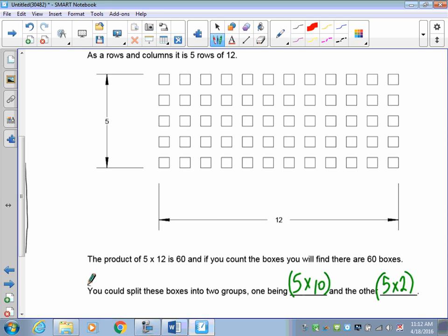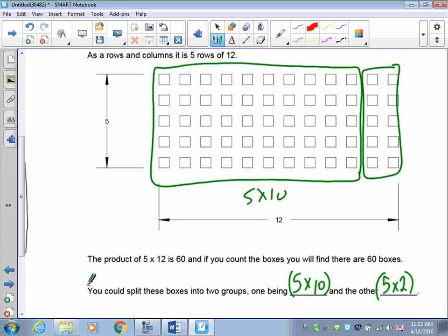So what I've done here is taken and done this. Here's 5 times 10, and here is 5 rows of 2, just splitting them up. If you turn the page, you'll see what I mean.